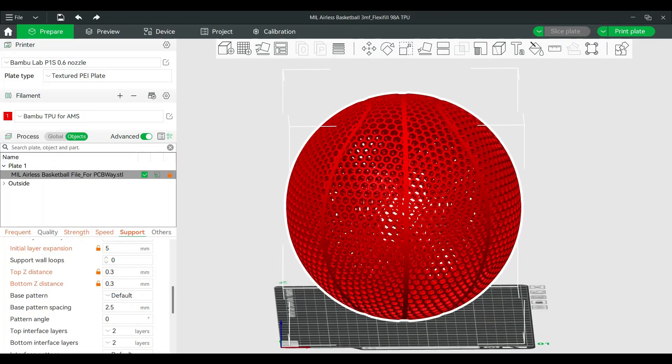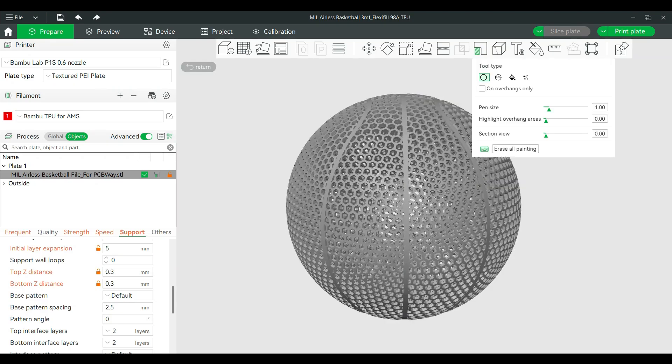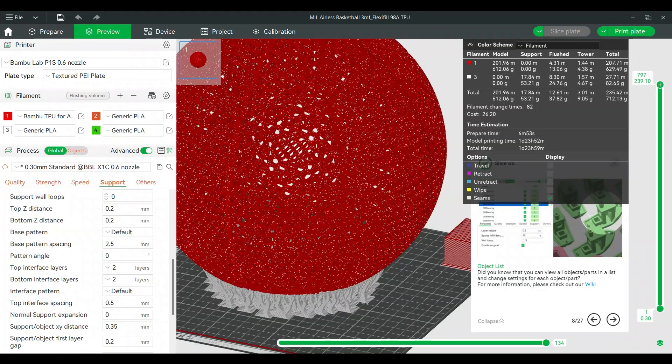Obviously the first thing I had to do was make a model that was specific to this TPU filament. It was a pretty dense filament so the lattices are pretty skinny, but once the model was ready I just had to put it in the slicer and I had to assign the supports as PLA filament and the actual basketball as the TPU filament.